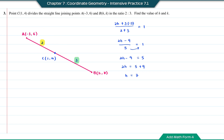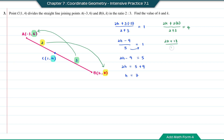To find K, using y-coordinates: (2K + 3×6) divided by (2+3) equals 4. So (2K + 18) over 5 = 4, giving 2K + 18 = 20, so 2K = 2 and K = 1.